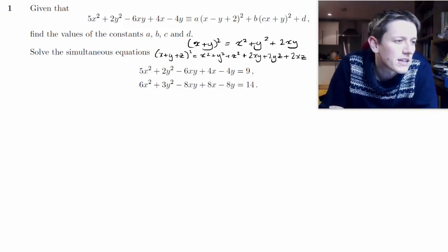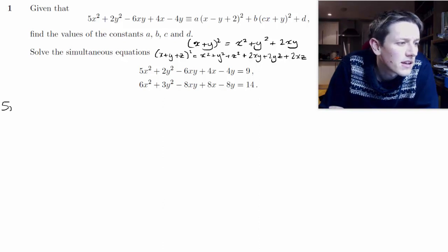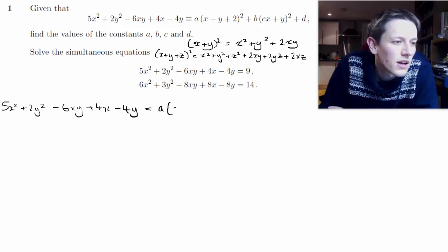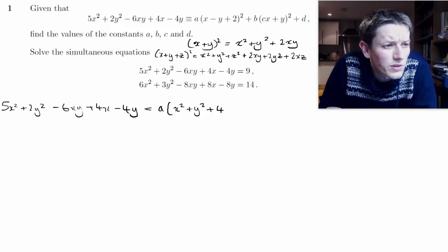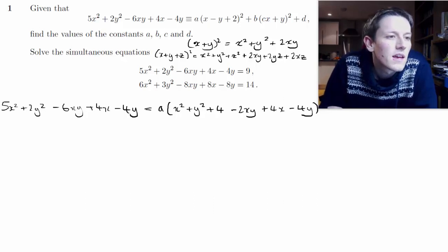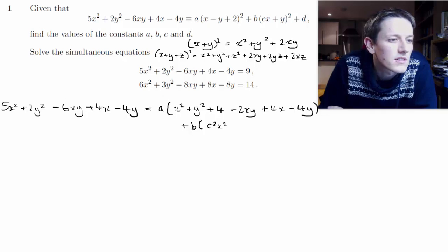So we'll use that when we multiply this out. We want to make the left hand side 5x² + 2y² − 6xy + 4x − 4y equal to a times (x² + y² + 4 − 2xy + 4x − 4y), plus b times (cx + y)² which is c²x² + y² + 2cxy, plus d.